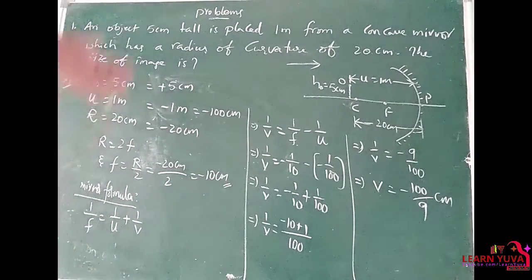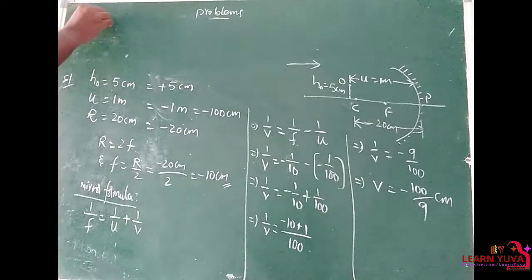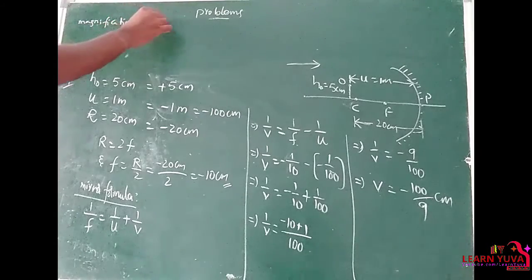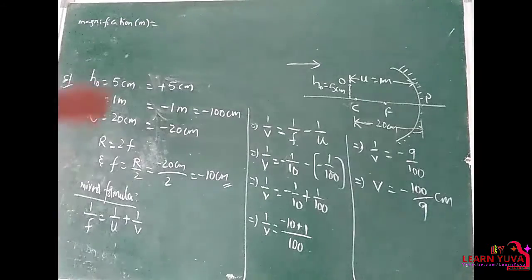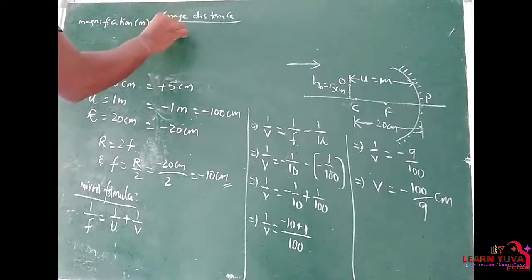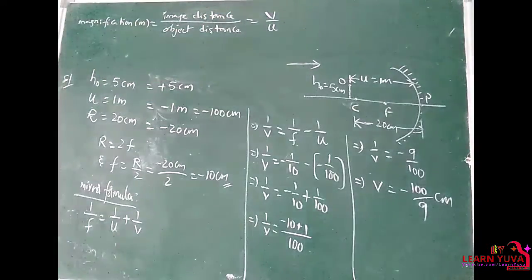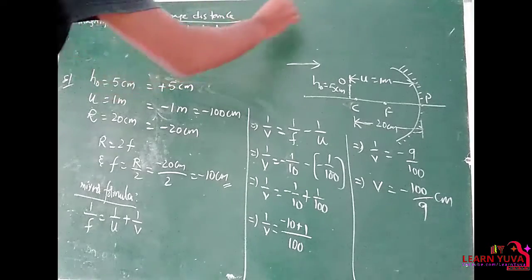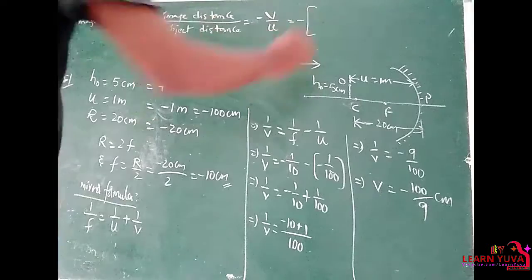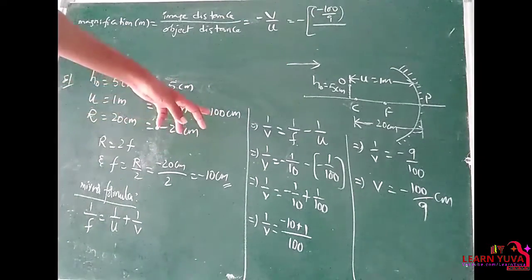By applying the magnification formula we can get the size of the image. Magnification M is equal to image distance by object distance, which is minus V by U. That is equal to minus V value of minus 100 by 9, divided by U value of minus 100 centimeters.